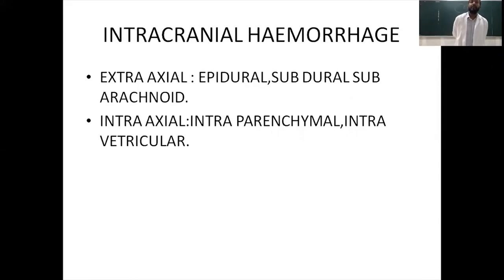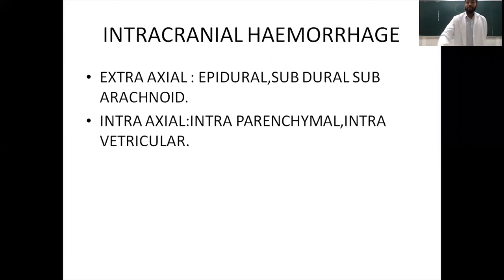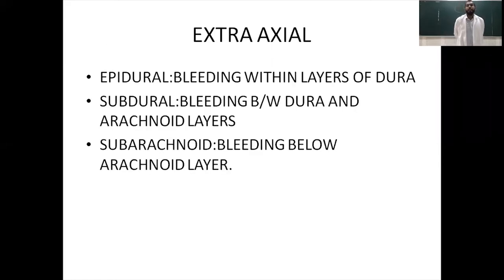Intracranial hemorrhage is divided into extra-axial and intra-axial. Extra-axial — not involving the brain tissue directly — can be epidural, subdural, or subarachnoid. Intra-axial is bleeding into the brain parenchyma or the intraventricular space — the two lateral ventricles, third ventricle, and fourth ventricle connected via the aqueduct. Epidural is bleeding within the layers of the dura; subdural is bleeding between the dura and arachnoid; subarachnoid is bleeding below the arachnoid layer.